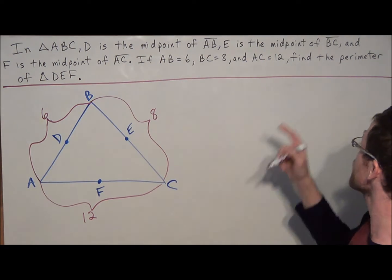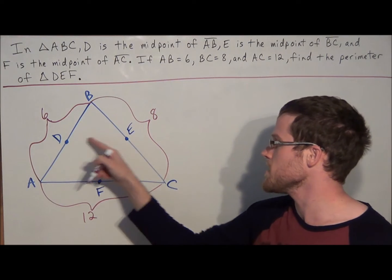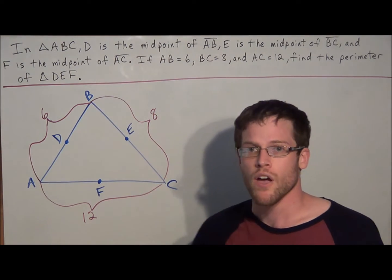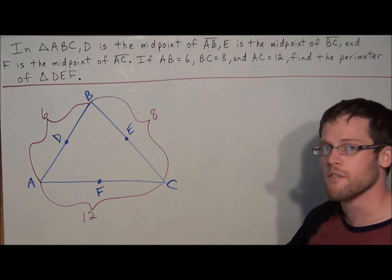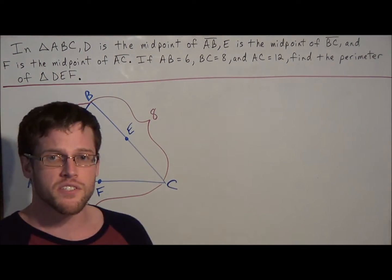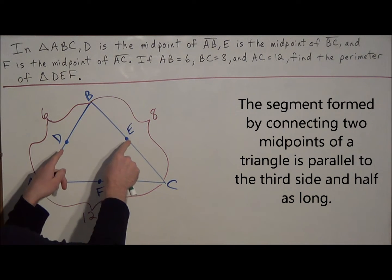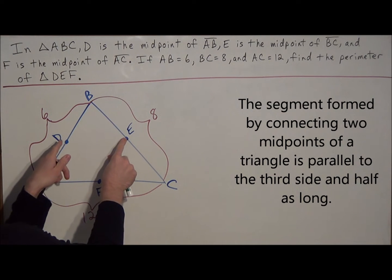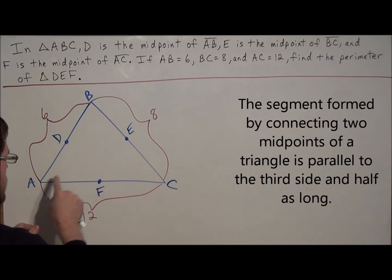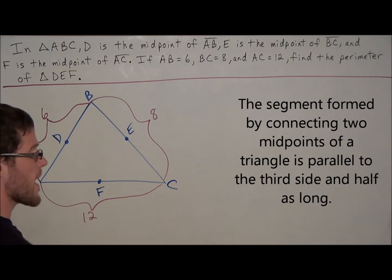And the task was to find the perimeter of triangle DEF. So before we connect D to E to F, we need to make use of the mid-segment theorem. So if we look at the mid-segment theorem, it states that when we connect the two midpoints of the sides of a triangle, that segment is parallel to the third side, and it's half the measure of that third side as well.